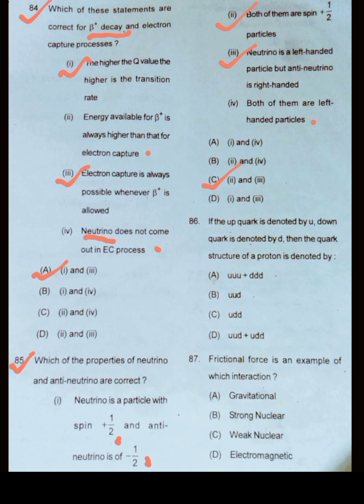Now in question number 86, if up quark is denoted by U, down quark is denoted by D, then the quark structure of a proton is denoted by.